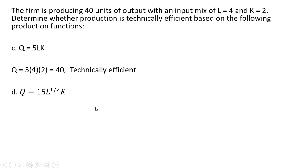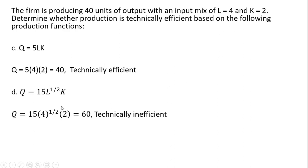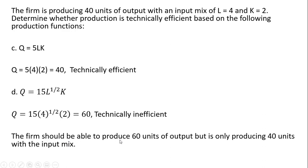With this production function, however, if we plug 4 and 2 into it, we see that the firm should be producing 60 units, but since it's only producing 40, the firm would be producing technically inefficiently. So the firm should be able to produce 60 units of output, but is only producing 40 units with the input mix of L equals 4 and K equals 2. That's it — I hope you found this video helpful.